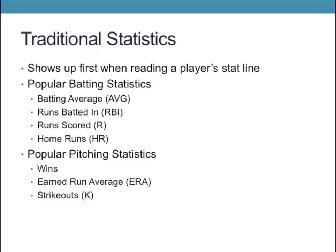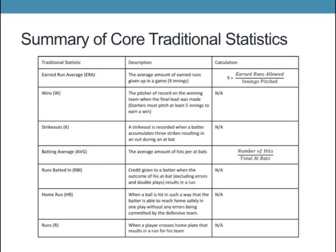Now we're going to briefly talk about the basics of traditional statistics and how they're used today. Statistics show a player's performance during games, and higher statistics generally correlate to better performance. In baseball, popular offensive statistics include batting average, runs batted in or RBIs, runs scored, and home runs. For pitching, popular stats include wins, earned run average or ERA, and strikeouts. Here's a summary of those statistics with a brief description along with how they are calculated — you could pause the presentation to look at each one if you aren't familiar.